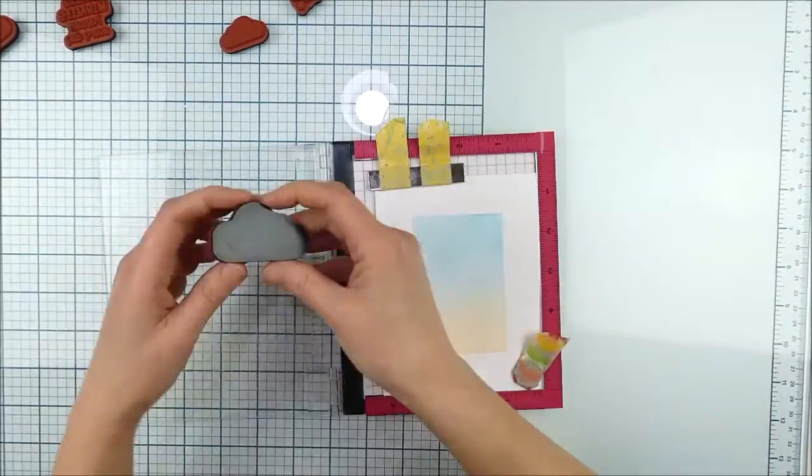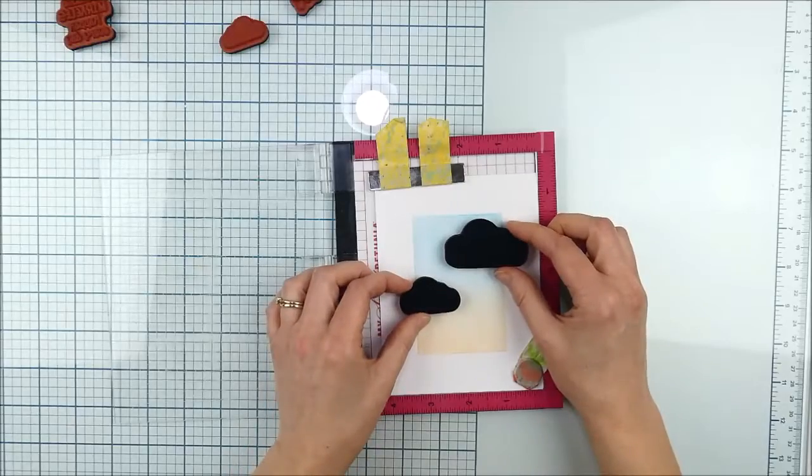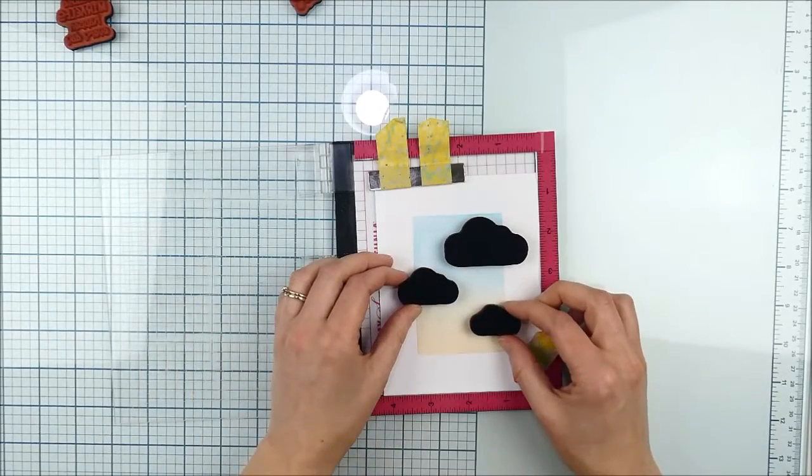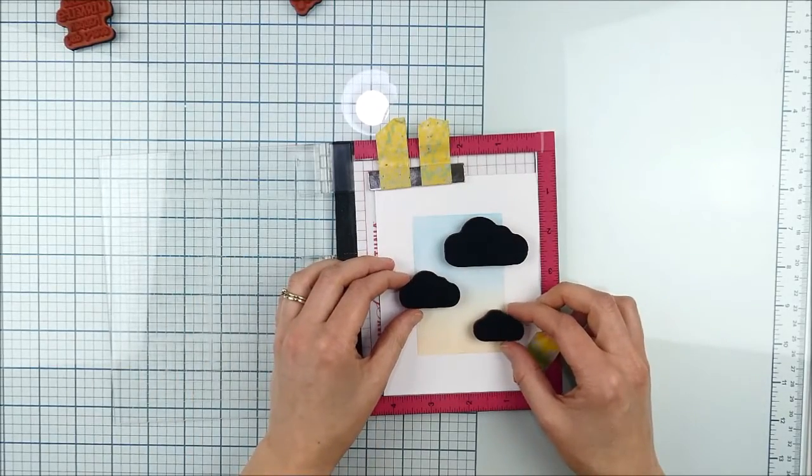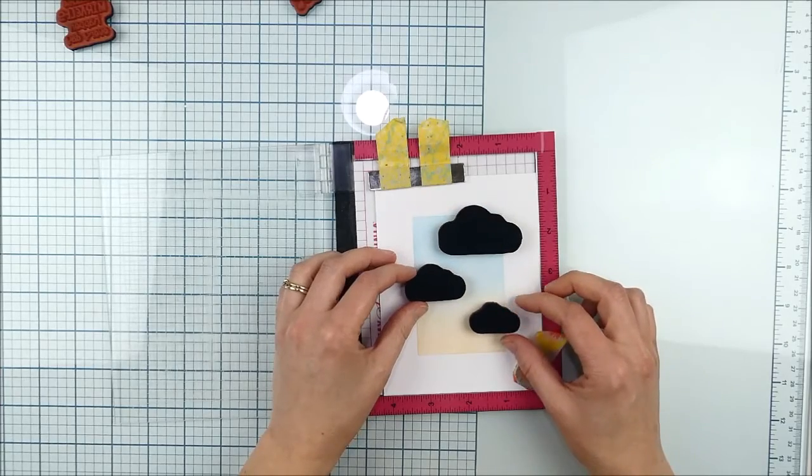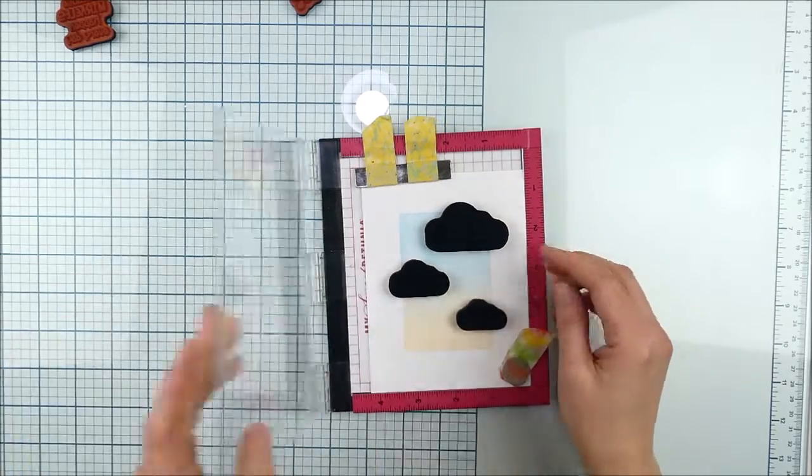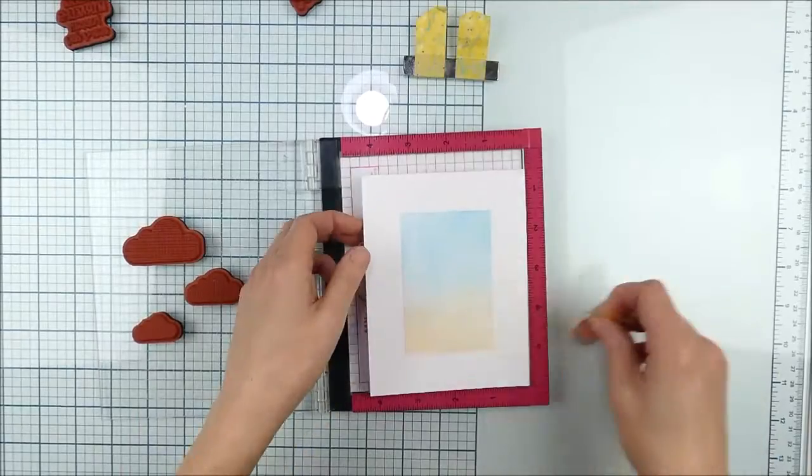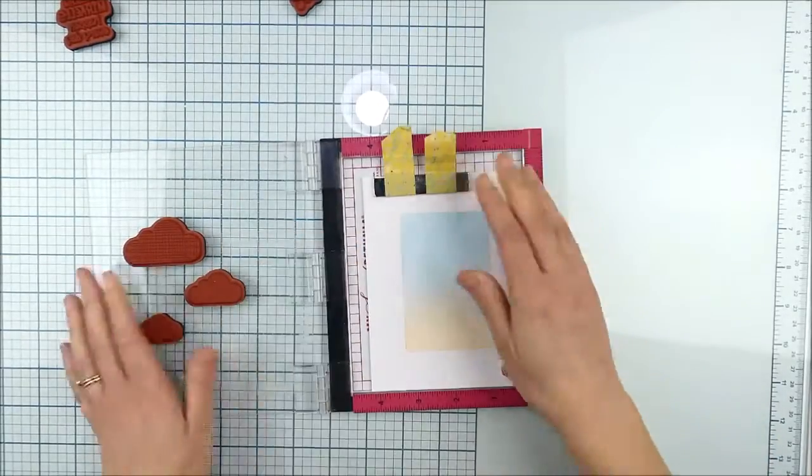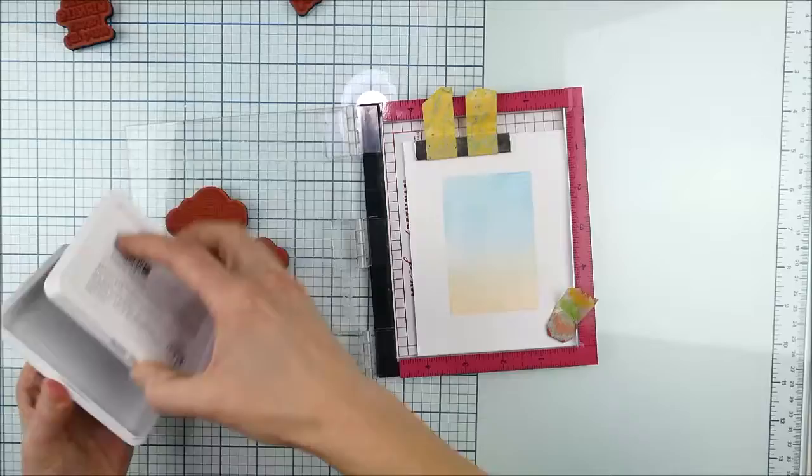Now I'm going to use my Misti to line up and stamp these and I'm just kind of playing with where I want to line up. I love that there's three clouds and they're all slightly different sizes. It kind of just gives you some fun possibilities with this. I forgot to take out my foam pad in my Misti, so I'm going to remove that and then reapply it down with a magnet.